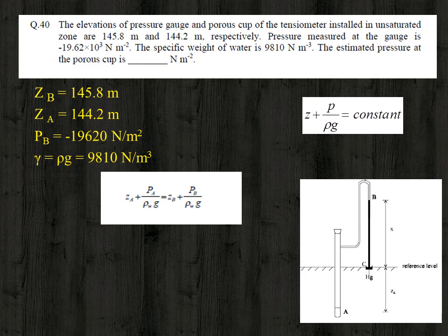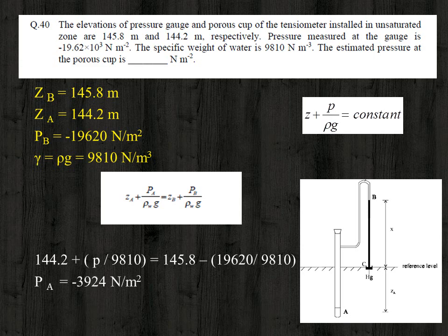In this equation the only unknown is P_A, that is the pressure at the porous cup — all other values are known. Substituting the values in the equation, we get P_A as minus 3,924 Newton per meter square.